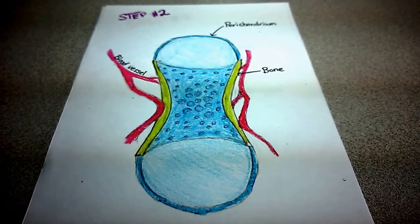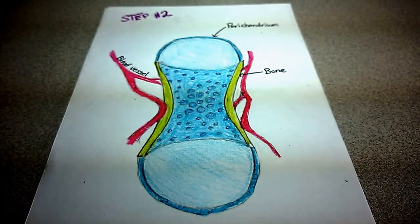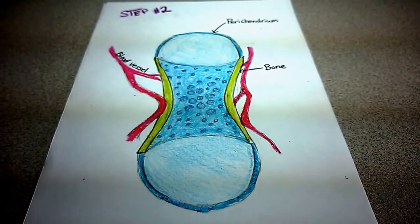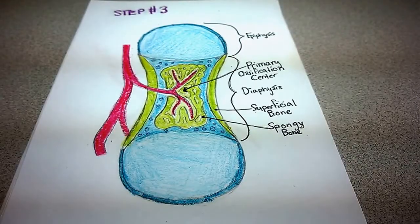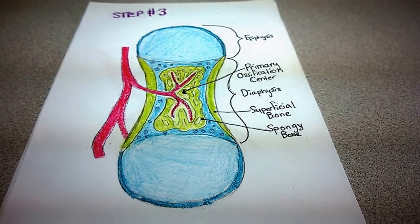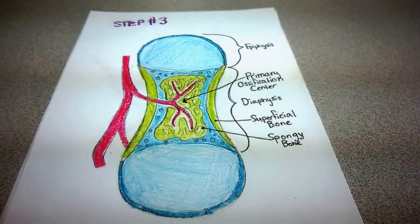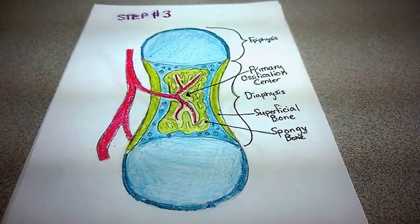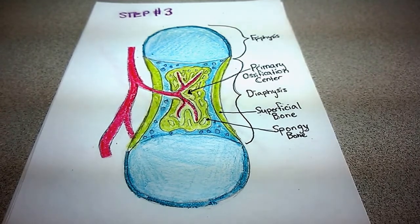In step three, blood vessels work themselves into the central cavern of the forming bone. This cavity is called the medullary cavity and will eventually contain red and yellow marrow.